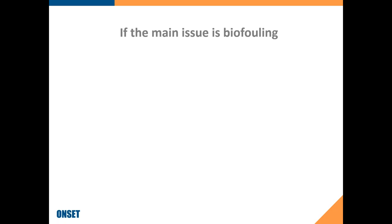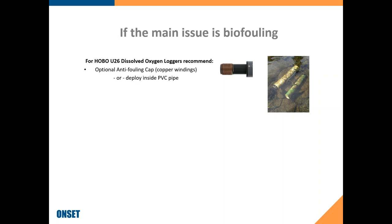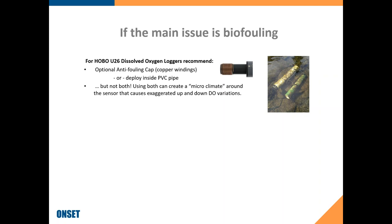If the main issue is bio-fouling, look at these techniques. If you're using the U26 dissolved oxygen loggers, we sell an optional anti-fouling cap which has copper windings — that's a common way of reducing fouling buildup, as the water has to flow through those copper windings. Another choice is to put the loggers inside a PVC pipe, which cuts down on light reaching the loggers and can reduce the amount of fouling. However, we have found in testing that you don't want to use both the anti-fouling cap and the PVC pipe together.